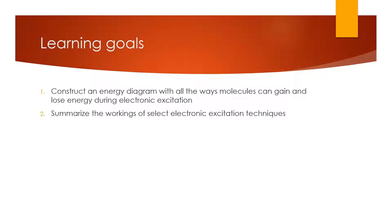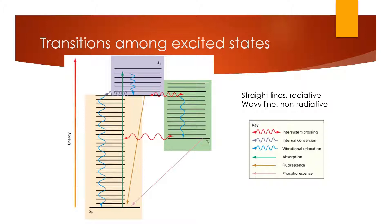We ended here last time, and this was our chart of what happens when we excite molecules. Molecules start in the ground state. Typically this is a singlet state, in the ground electronic and vibrational state. When we excite them, they go from the ground state to an excited state, and they have to obey the ΔS = 0 rule. So since most molecules start in the singlet state, they go to the singlet state when they're excited.